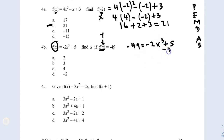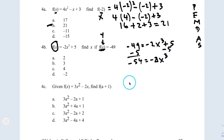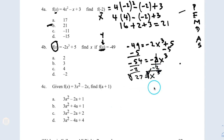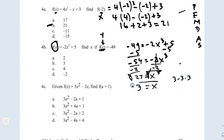Now I need to solve for x — leave x by itself. Subtract 5 on both sides: that gives me negative 54 equals negative 2x cubed. Divide both sides by negative 2: positive 54 divided by 2 is 27, so I have x cubed equals 27. I have to take the cube root of both sides. The cube root cancels the cube, leaving x. The cube root of 27 is 3, because 3 times 3 times 3 gives you 27. My answer is B.